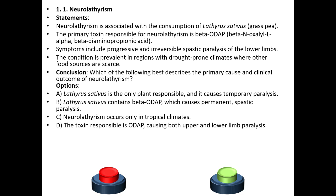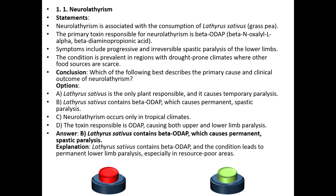Option C: Neurolathyrism occurs only in tropical climates. Option D: The toxin responsible is ODAP causing both upper and lower limb paralysis. The answer is B: Lathyrus sativus contains beta-ODAP which causes permanent spastic lower limb paralysis.